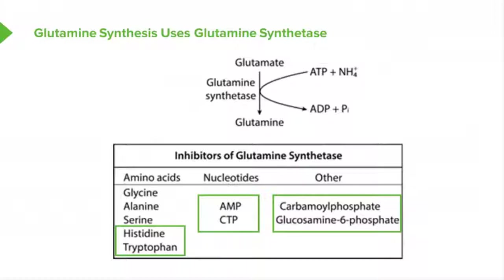Glutamine synthetase is regulated by a wide variety of inhibitors, some of which are shown on screen. The molecules in boxes are all made from glutamine: histidine and tryptophan among amino acids, AMP and CTP among nucleotides, and carbamoyl phosphate and glucosamine-6-phosphate among other molecules. As these products accumulate, it signals that the cell has abundant glutamine. When they get too high, they turn off the enzyme, creating a balance that controls glutamine synthesis.